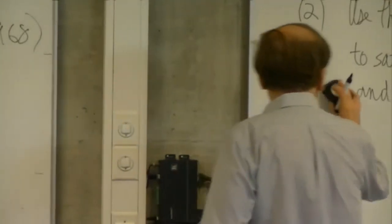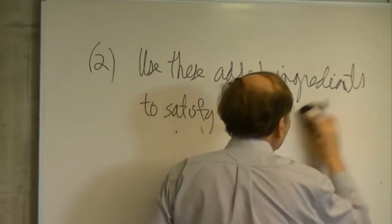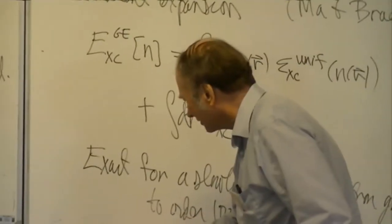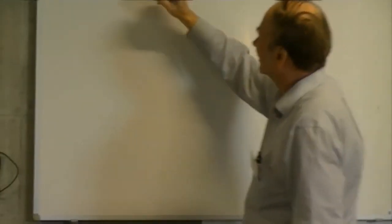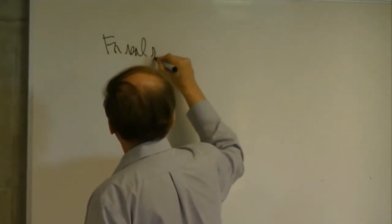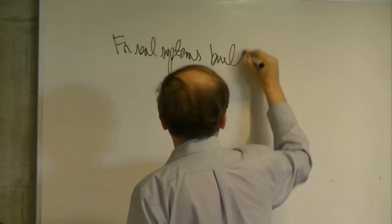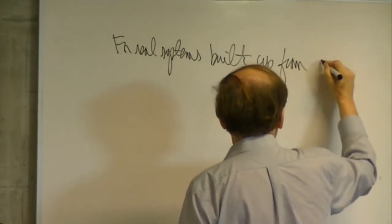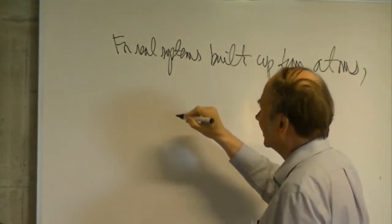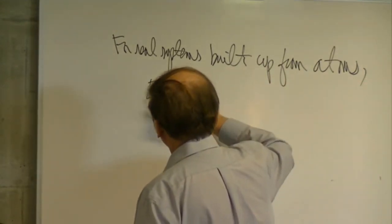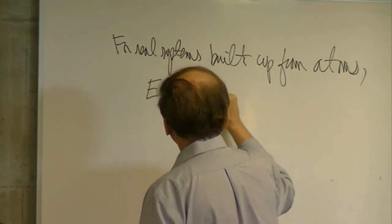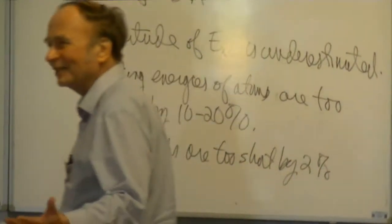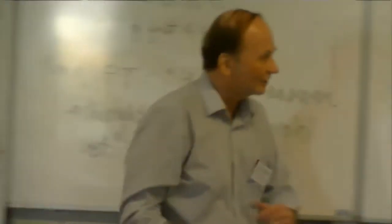This gradient expansion looked like a promising systematic improvement, but unfortunately it didn't work out that way. The second-order gradient correction makes the correlation energy positive for real systems built from atoms — molecules and solids — but as shown earlier the correlation energy must be negative. This happens because gradients of the density in real systems are not small compared to the local Fermi wave vector and local screening length. As a result, the second-order gradient expansion of the exchange-correlation hole violates two of the three exact sum rules.